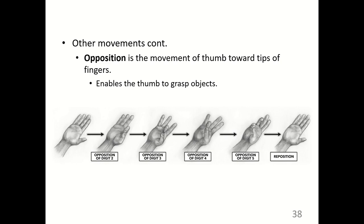Opposition is the movement of the thumb toward the tips of the other fingers, starting with the pinky, then ring, then middle, then index finger. Only primates can perform opposition.